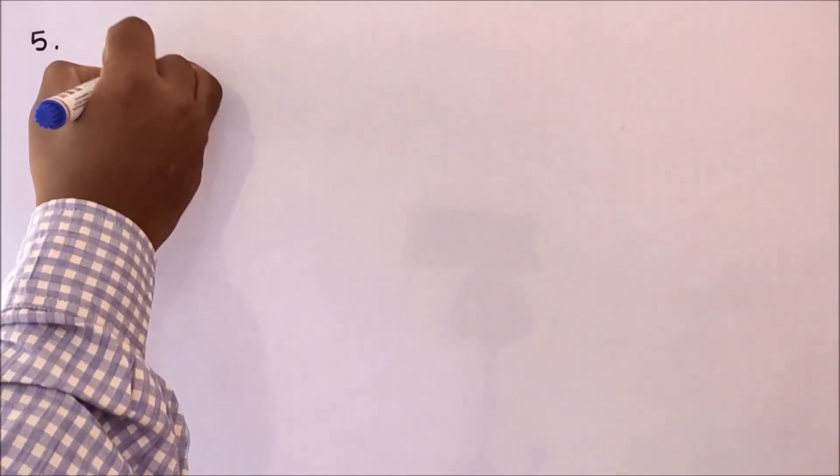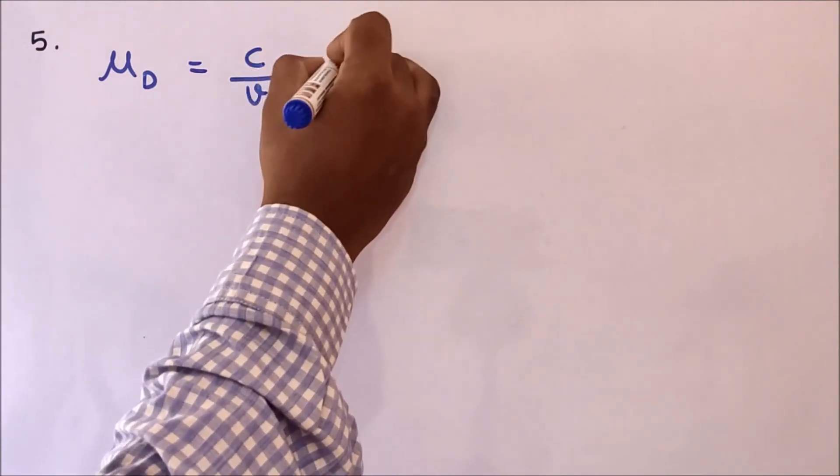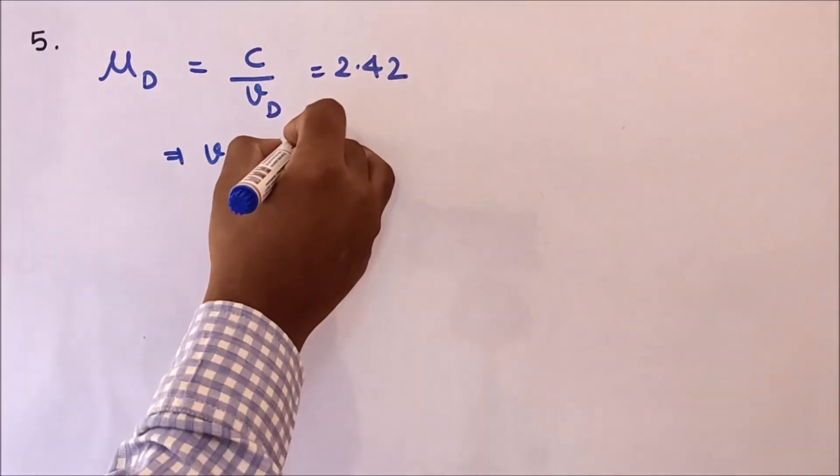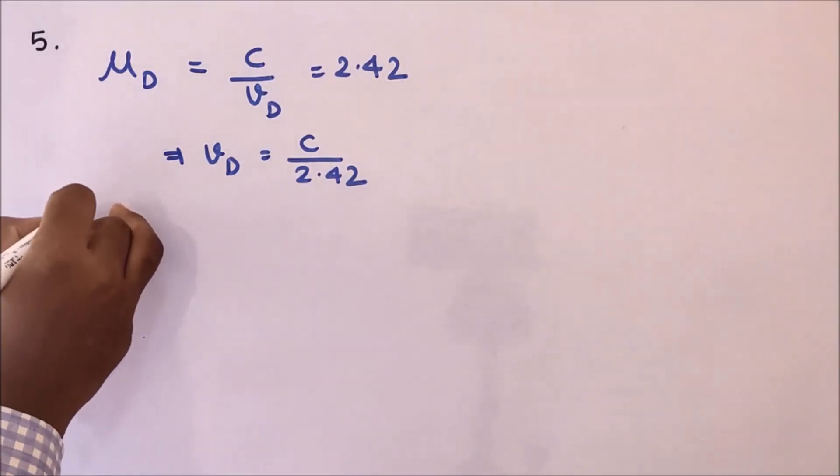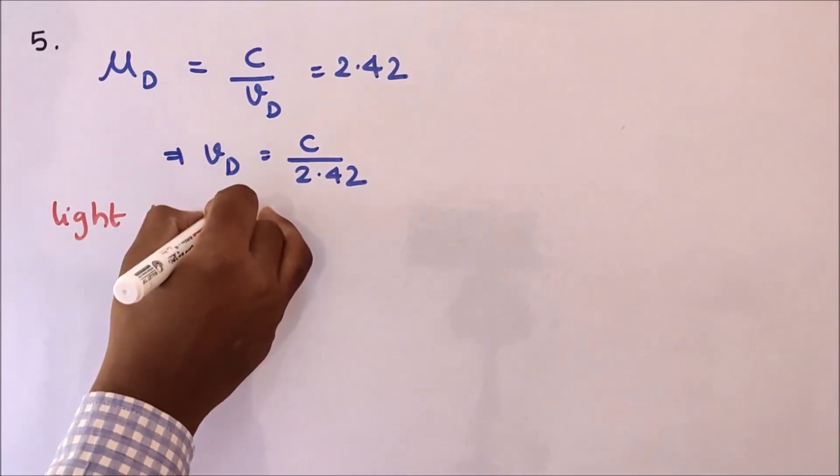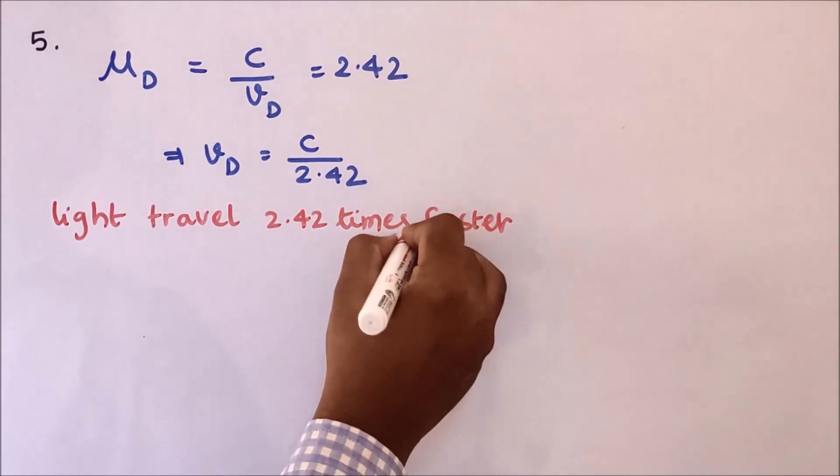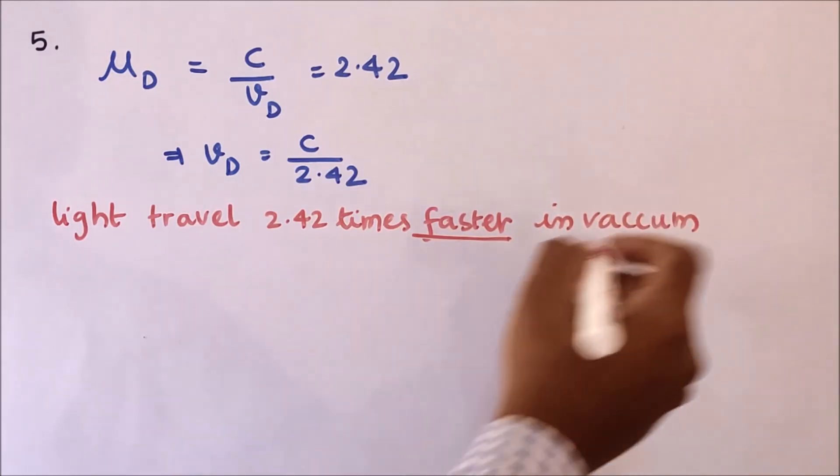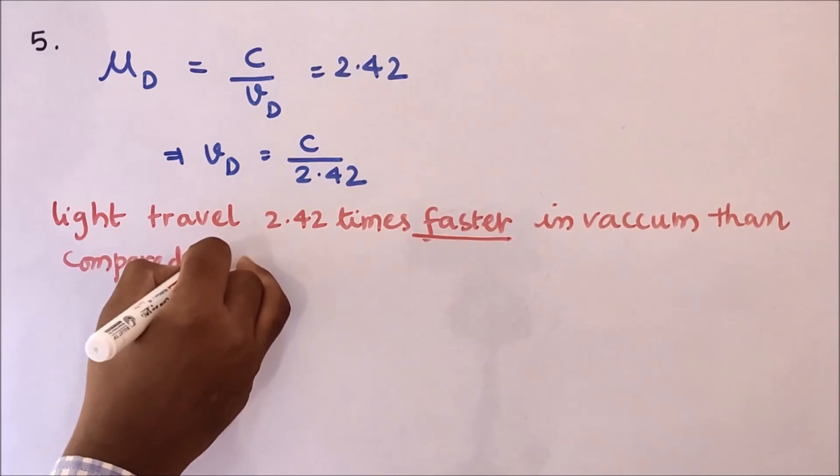So refractive index of diamond, let me write it as μ_D, and μ_D is equal to speed of light in vacuum (c) by speed of light in diamond (v_D), and its value is 2.42. What does this mean? This means that v_D is equal to c by 2.42. So you have to write this in statement form. Answer should be in the statement. So it means that light travels 2.42 times faster in vacuum than compared to diamond.